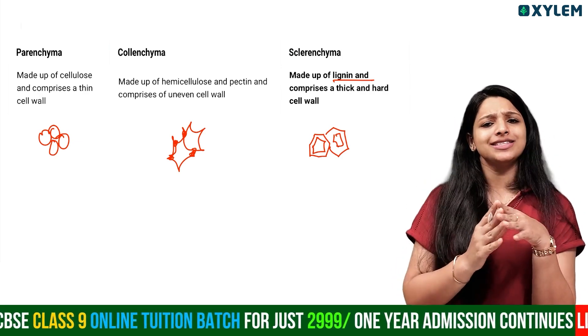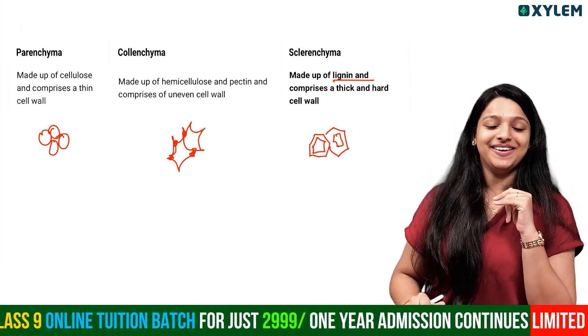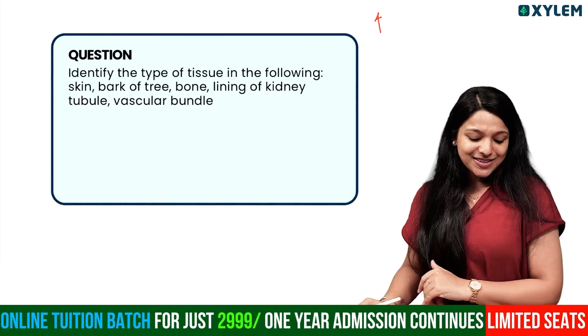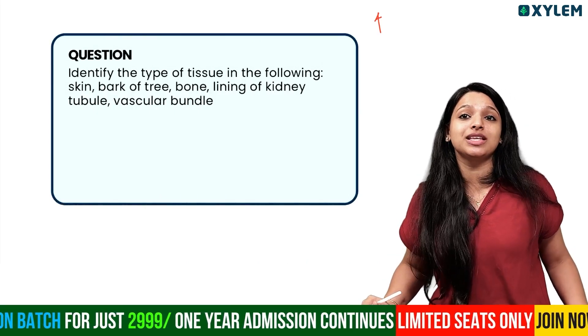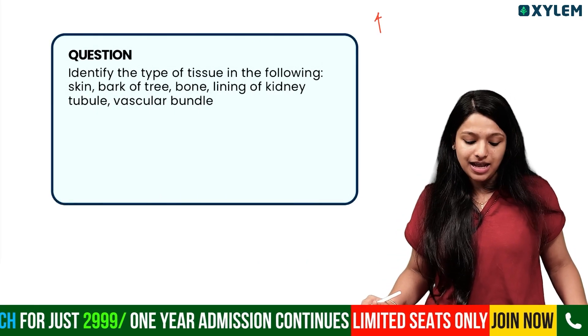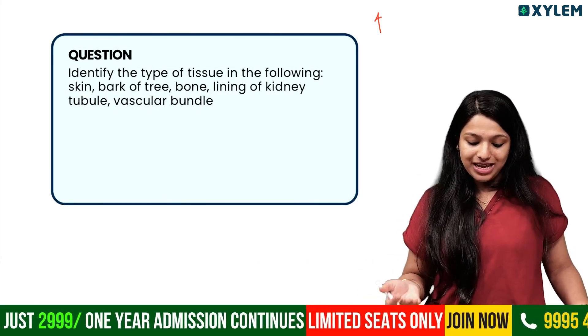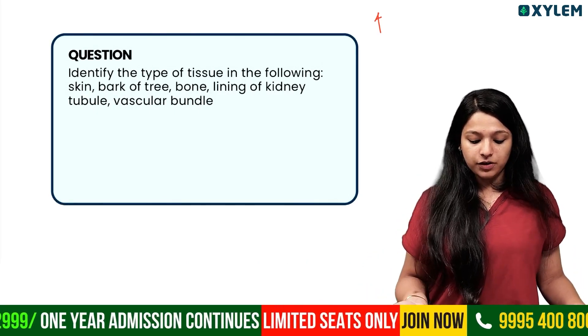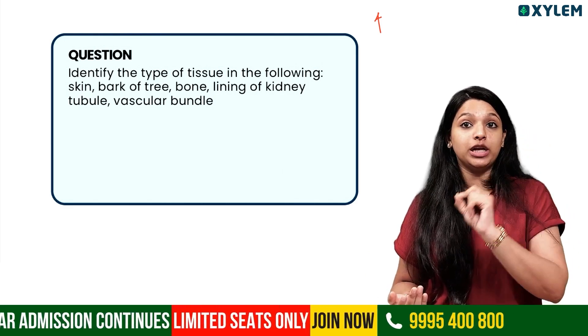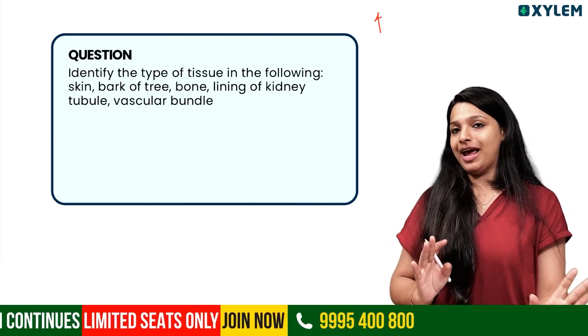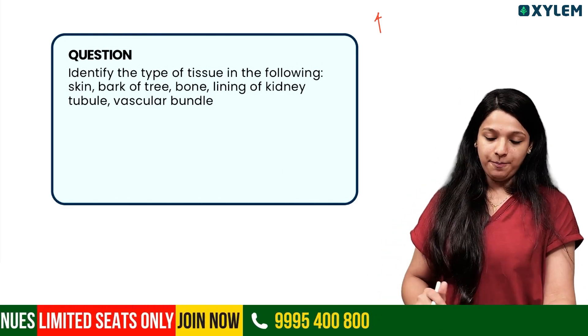Diagram also best. Second question: identify the type of tissues in the following — skin, bark of tree, bone, lining of kidney tubule, and vascular bundle. We have to identify each one.